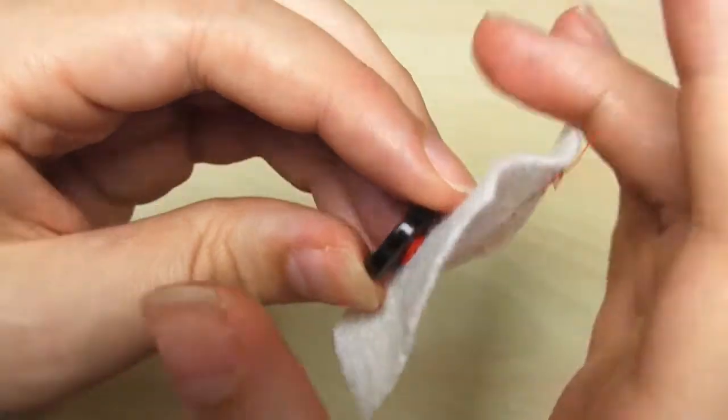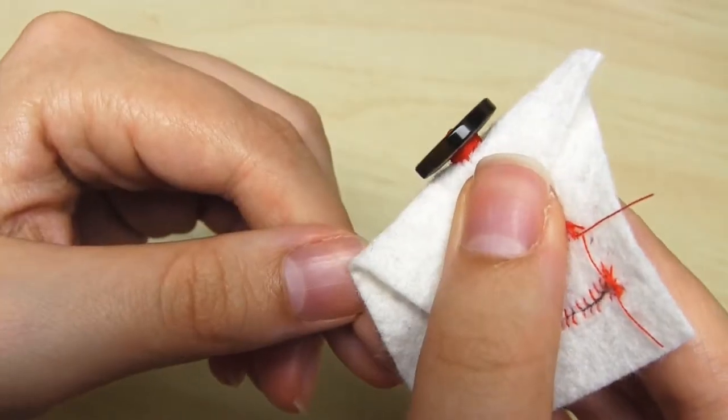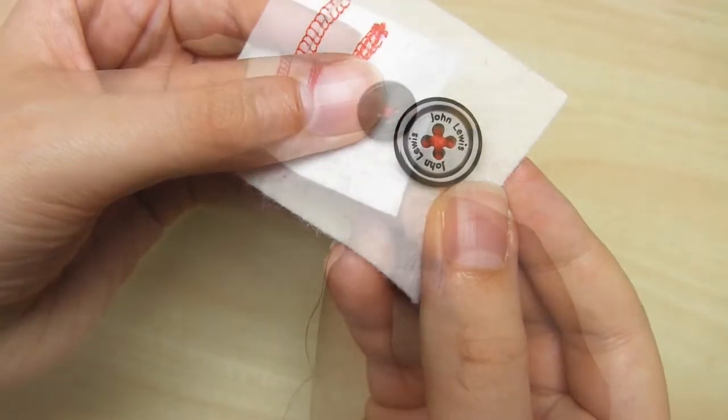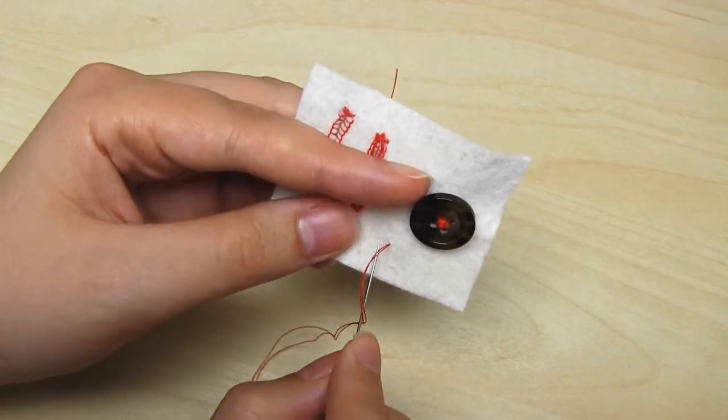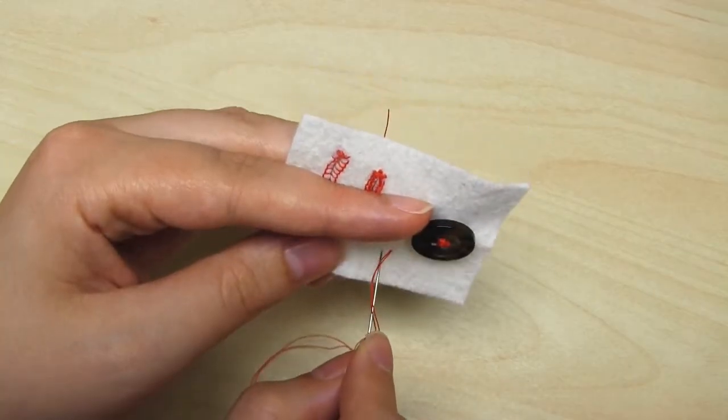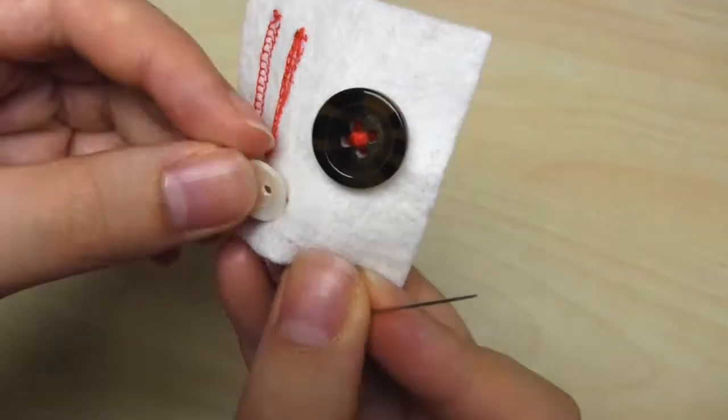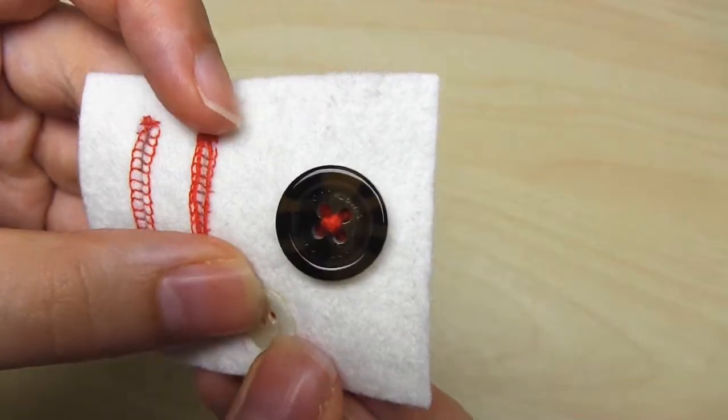If you're wanting a demonstration of how to sew a two-hole button on instead, then the main difference is that you start with just a single stitch rather than a cross. And the length of this stitch basically represents the distance between the holes in the button. So you line up the button with the stitch, and then you start sewing the button onto the fabric.